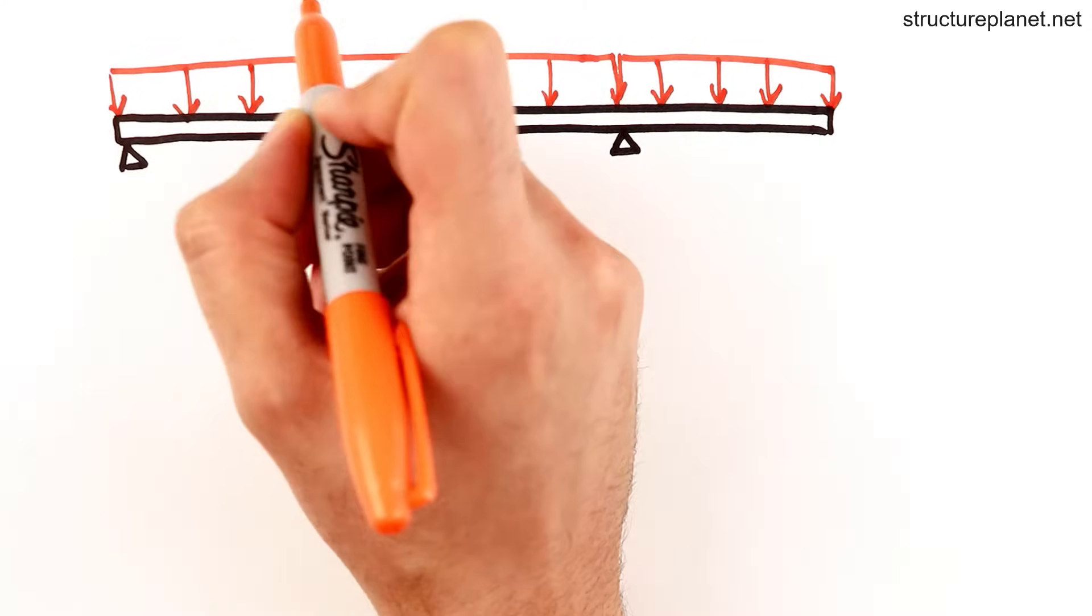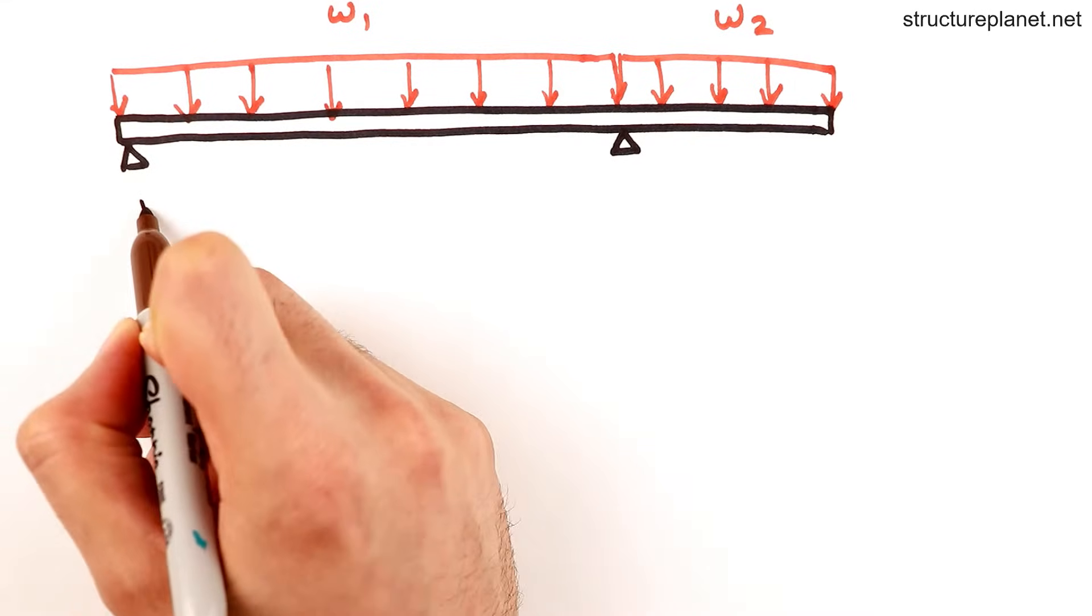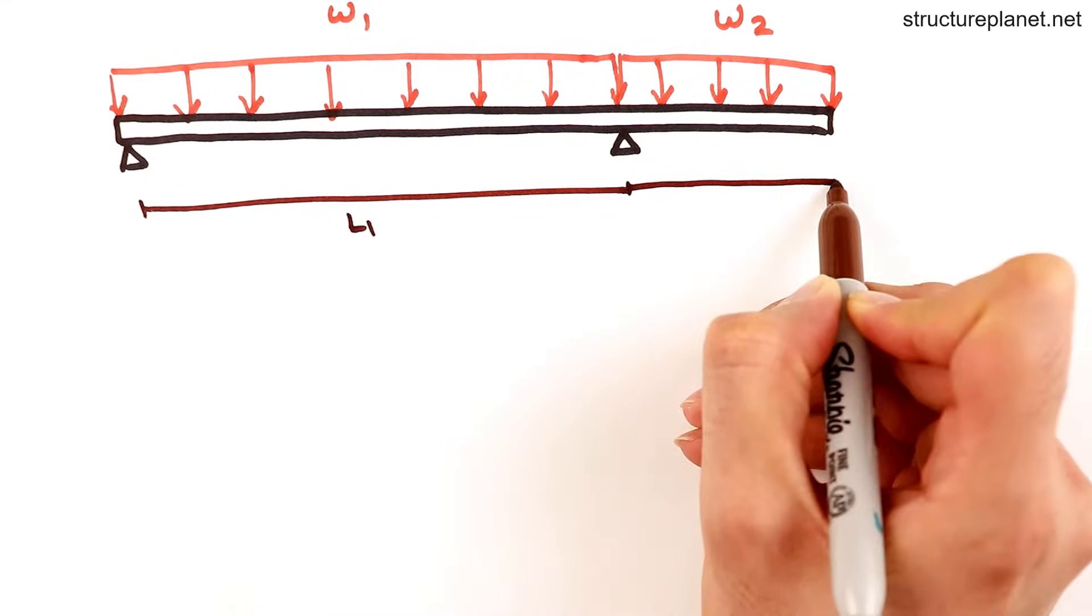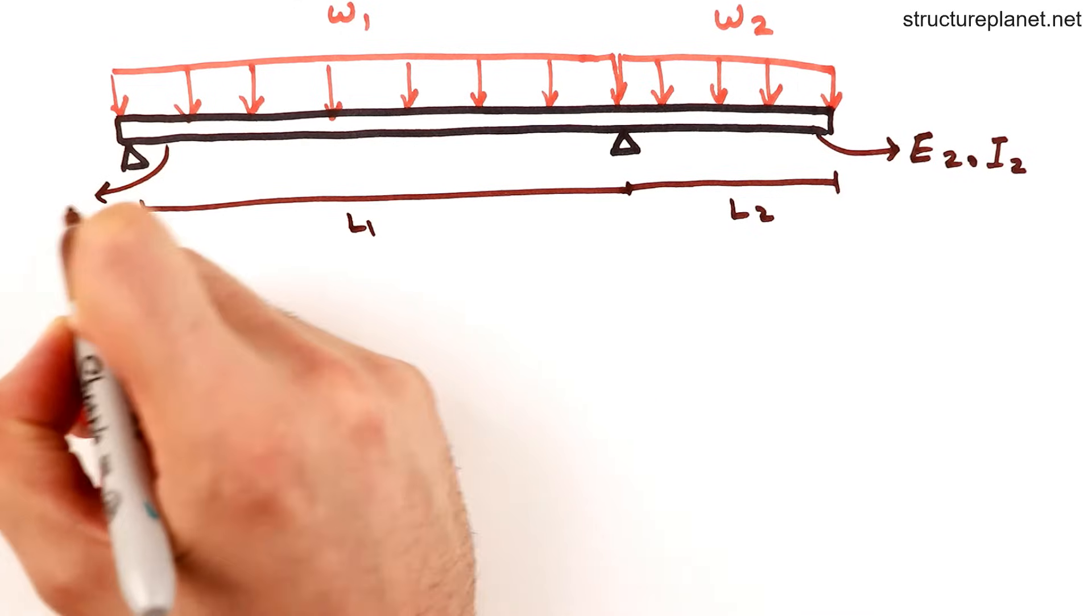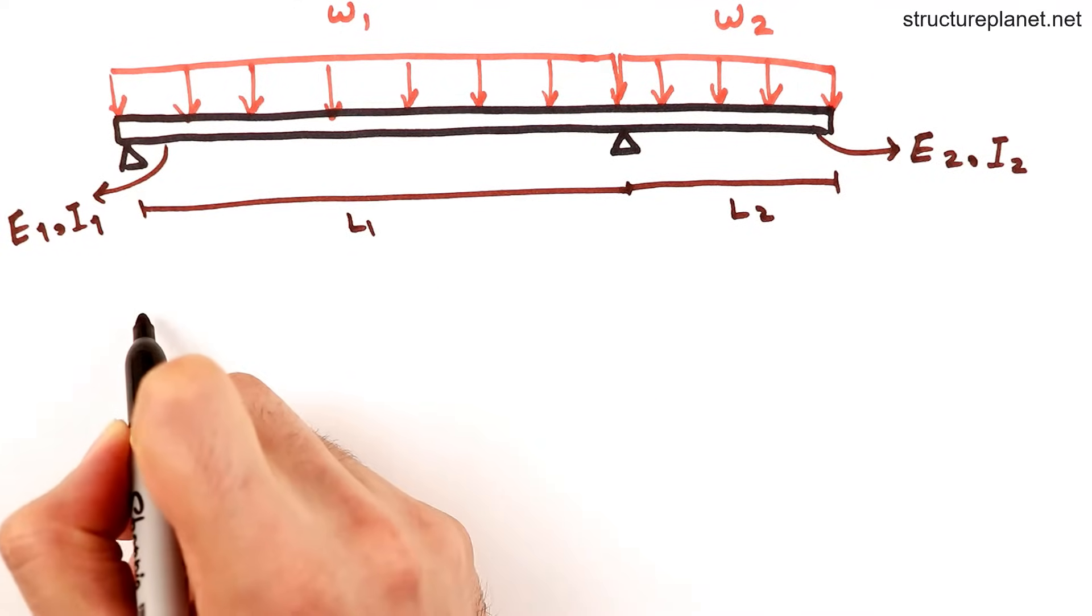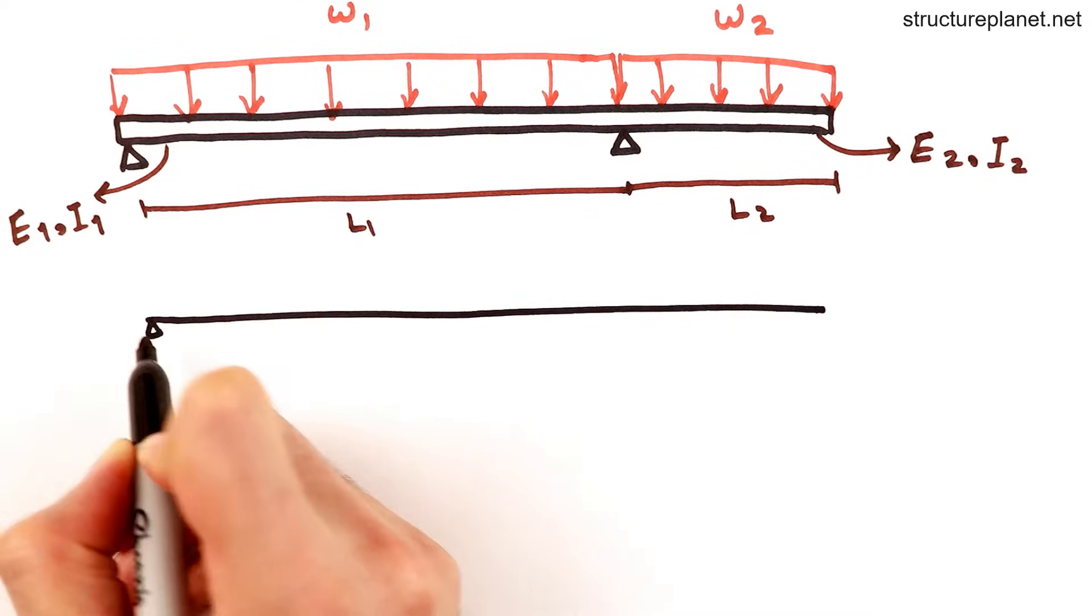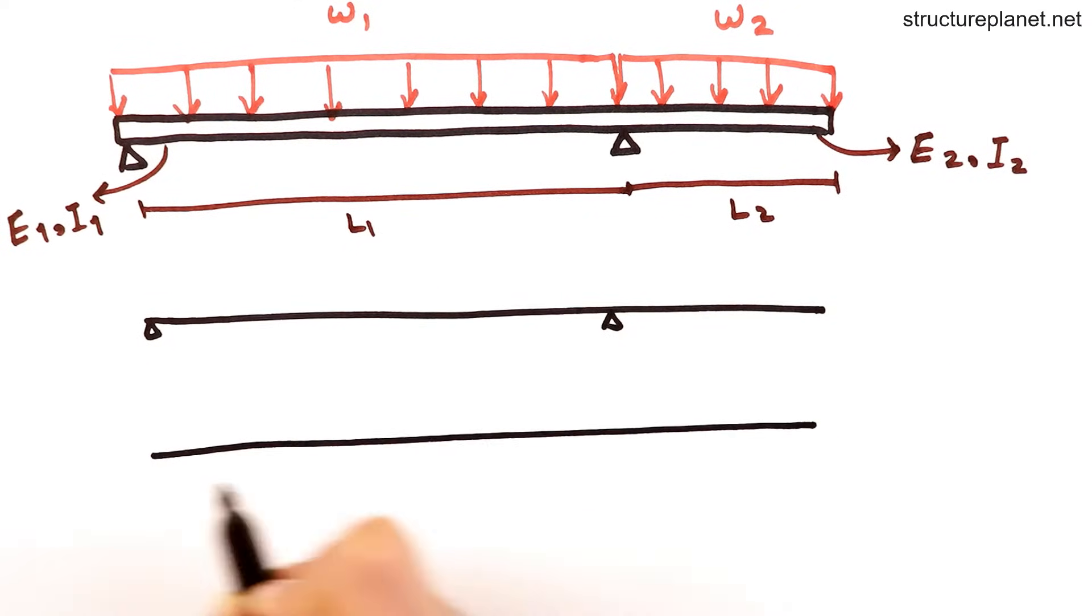Now you may ask what the backspan is? Backspan is a continuation of cantilever beyond its support. By having a properly designed backspan and the proper detailing to ensure continuity of member over the support, the supporting column may not have to even be moment connected to the cantilever anymore.